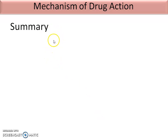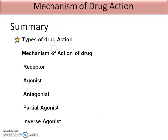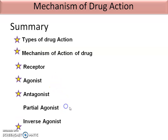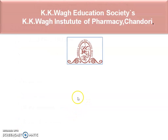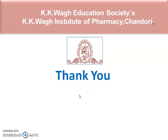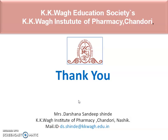In summary, in this session we learned types of drug action, mechanism of drug action, receptor, agonist, antagonist, partial agonist, and inverse agonist or negative agonist. Thank you for watching. If you liked it, please press the like and subscribe buttons. For any queries, you can contact me via the email shown. Thank you.